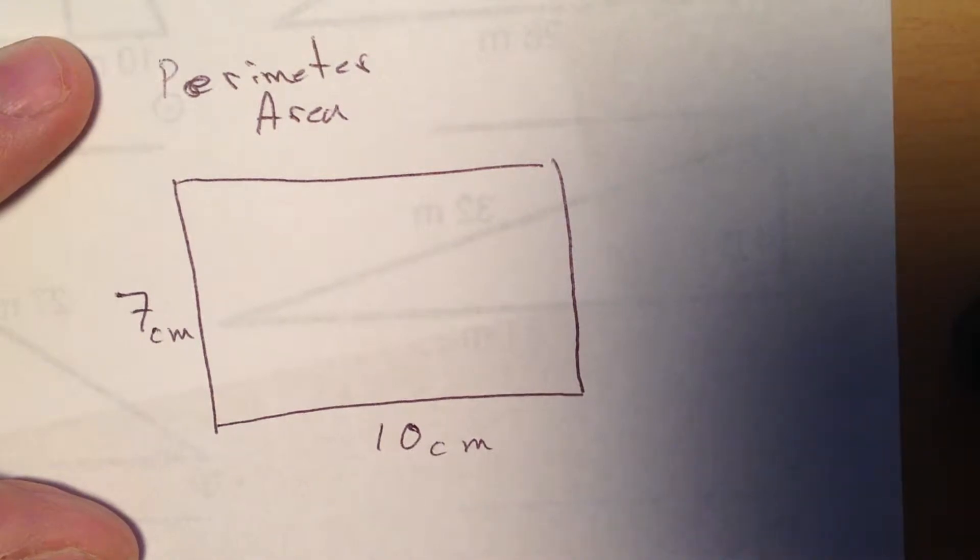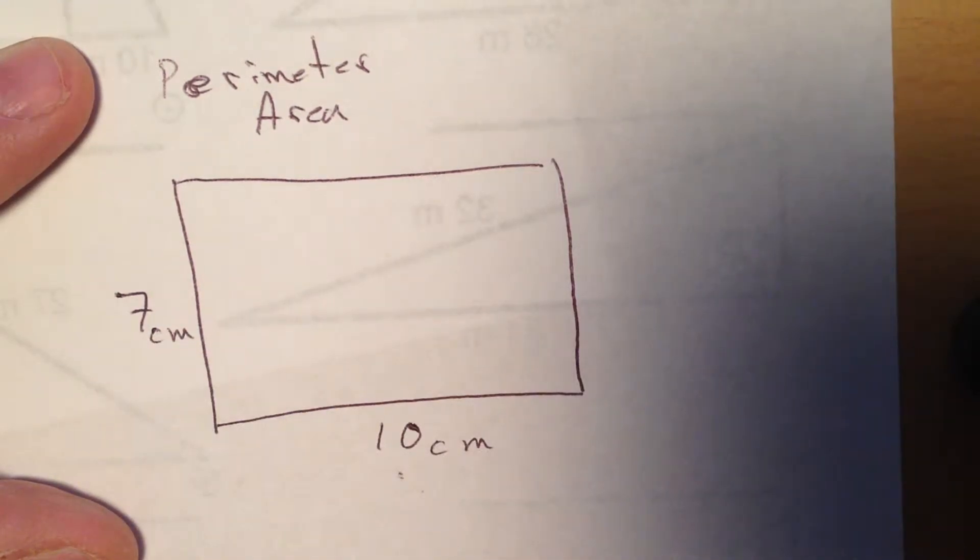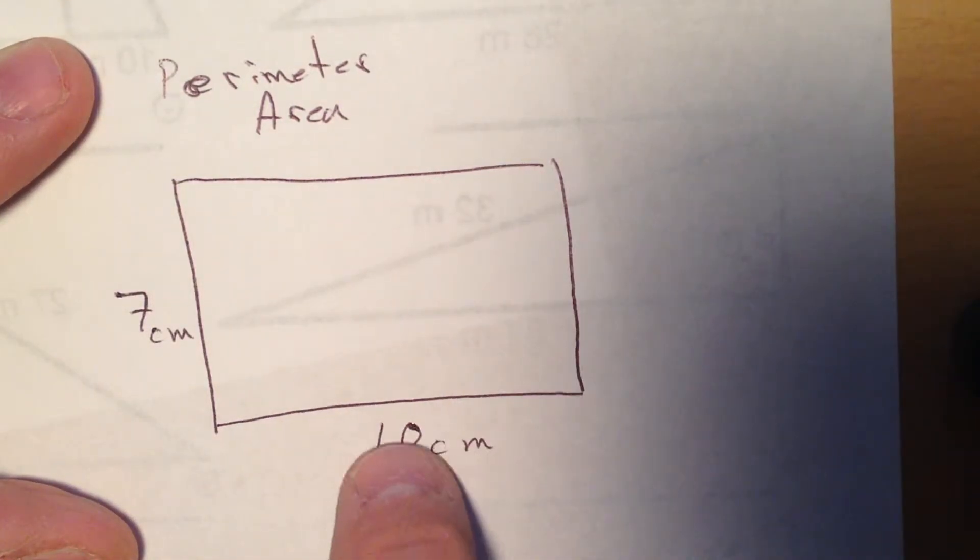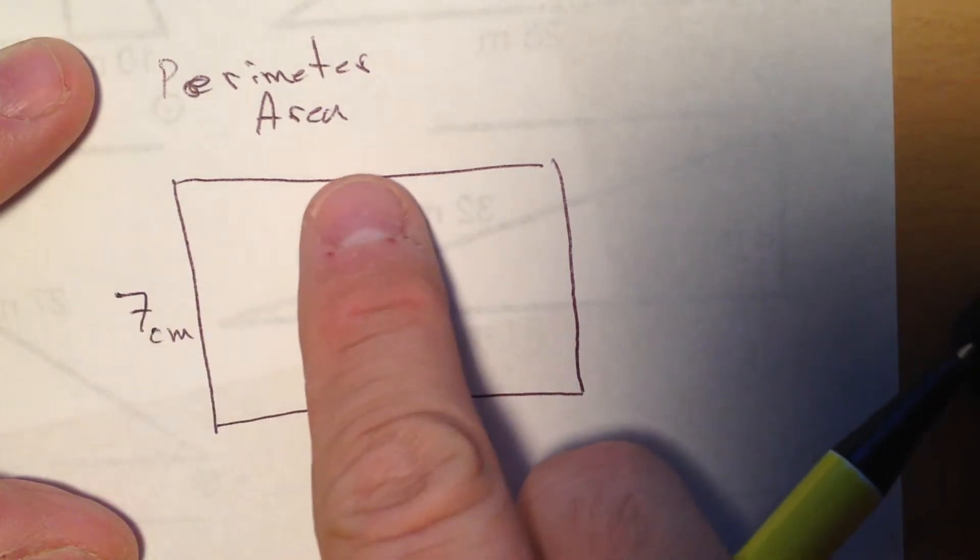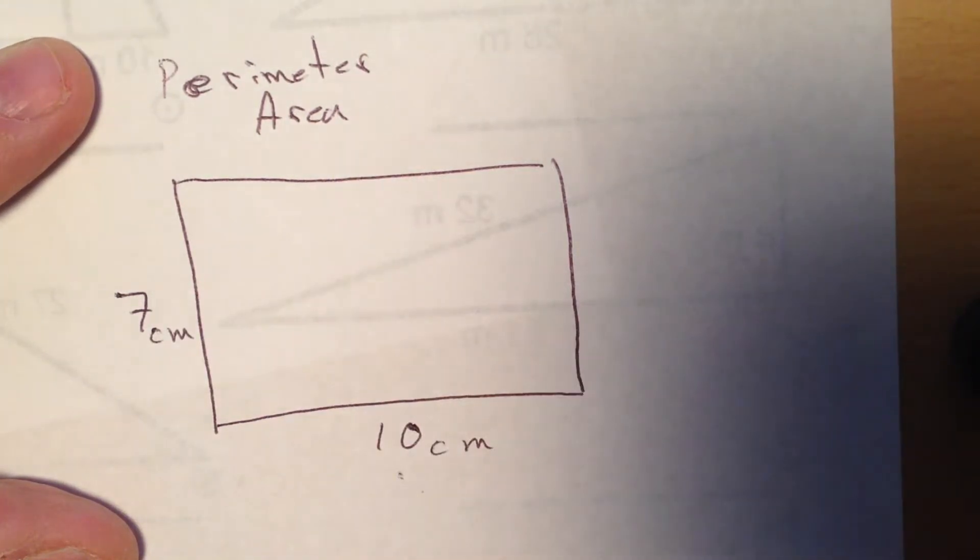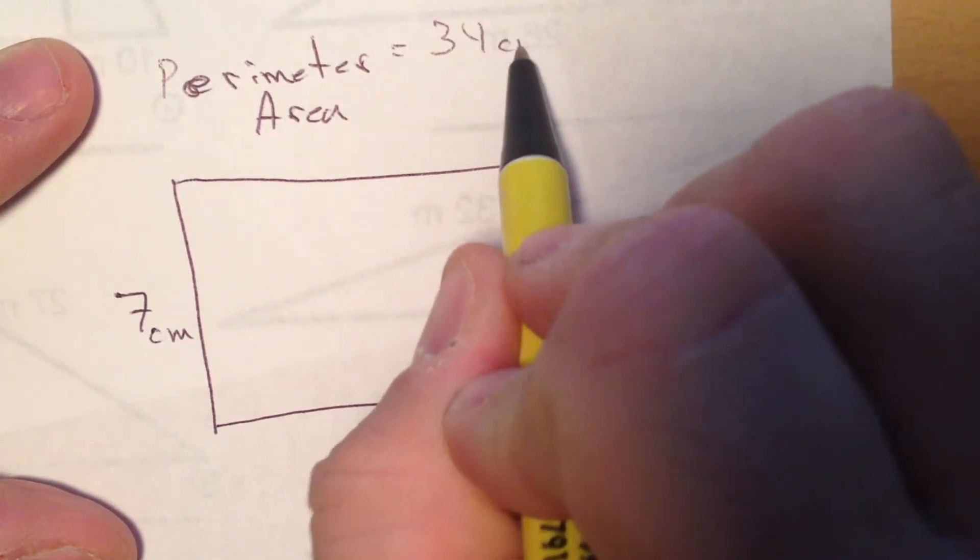There's many different ways you can calculate this. Since the top and the bottom of a rectangle are the same, you can take 10 times 2 is 20, sides are the same, 7 times 2 is 14, add 20 and 14 together to get your perimeter. Or you can simply go right around the figure and add them up: 10 plus 7 is 17, plus 10 is 27, plus another 7 is going to give me 34 centimeters.